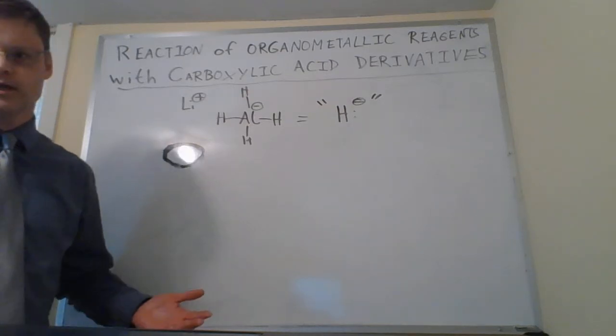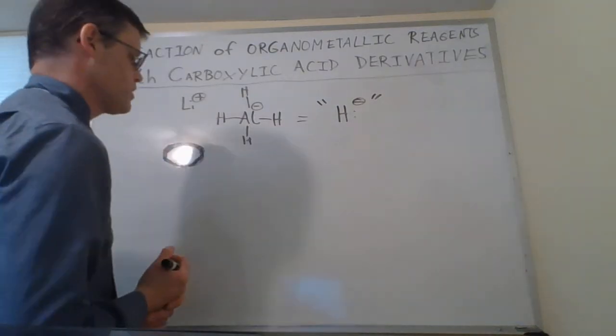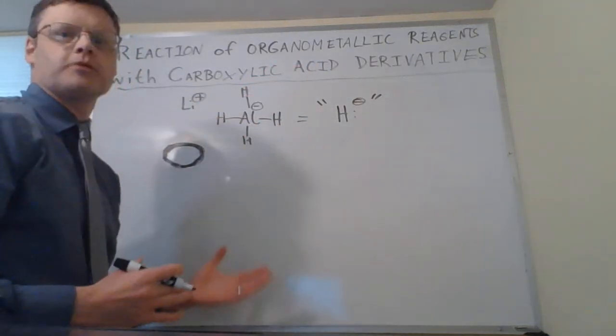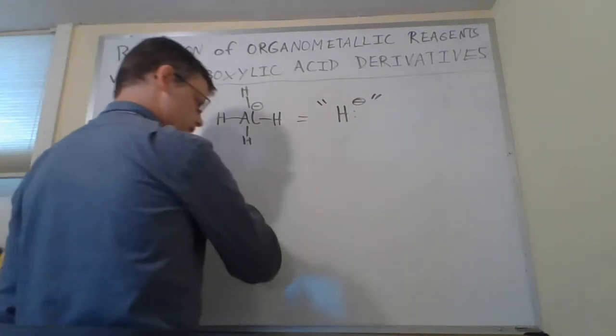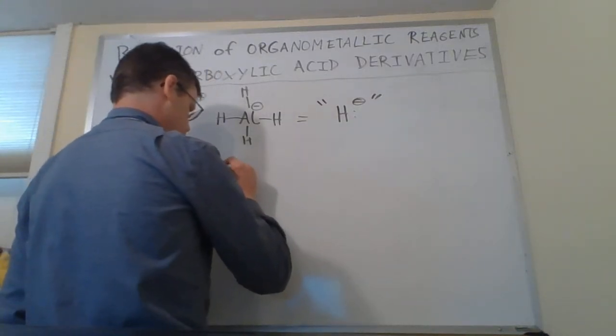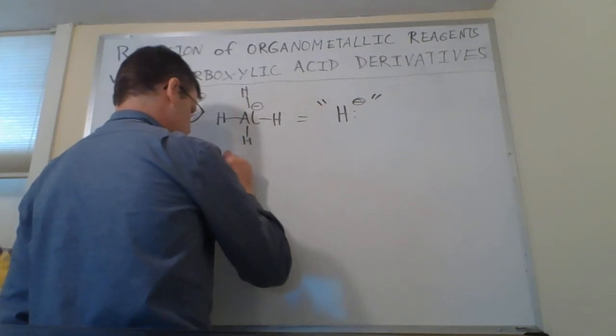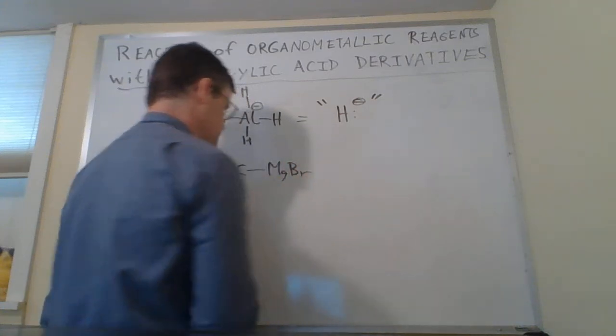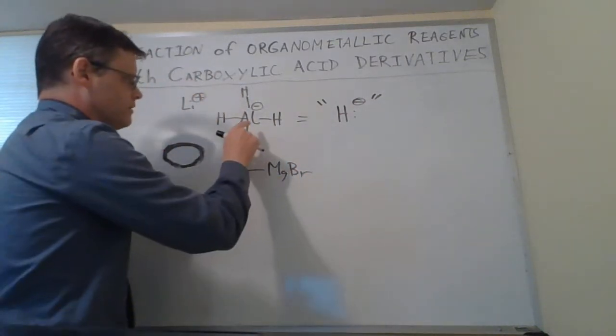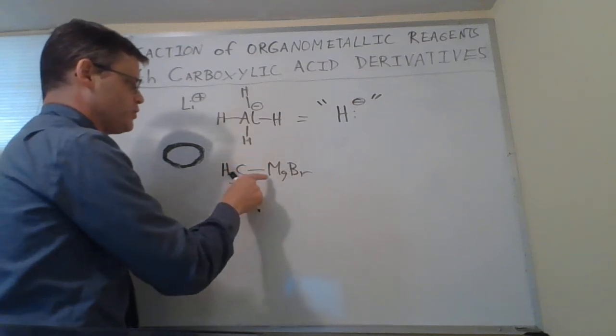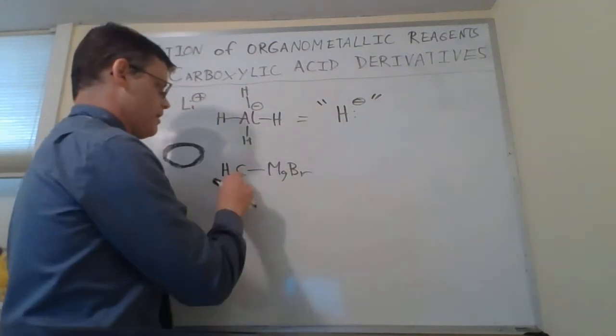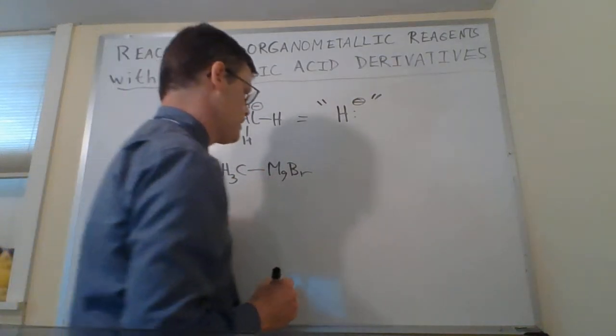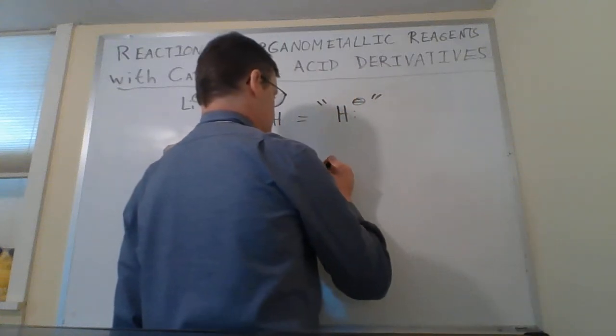Organometallic reagents are reagents that have a carbon-metal bond. An example would be a Grignard reagent - I'll try a very simple one here: methyl magnesium bromide (CH3MgBr). This bond is polarized such that we have a partial negative charge on the carbon and a partial positive charge on the magnesium, so it's going to be a synthetic equivalent of a carbanion.